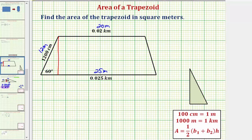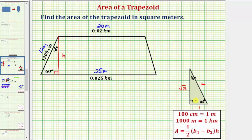By sketching the height h, we now have a right triangle on the left, because this is a right angle. This is a special right triangle: this angle is 90 degrees, this angle is 60 degrees, and therefore this acute angle is 30 degrees. Any 30-60-90 right triangle is proportional to the triangle where the short leg is one, the hypotenuse is two, and the long leg is square root of three. Because this right triangle is proportional, we can set up a proportion to determine the height of the trapezoid.